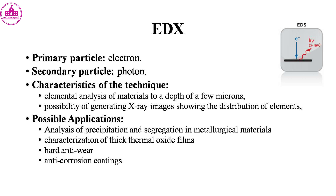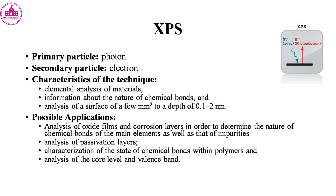XPS uses an X-ray primary particle and detects electron secondary particles. It provides elemental analysis of materials and information about the nature of chemical bonds, analyzing a surface area of a few millimeters to a depth of 0.1–2 nm. Applications include analysis of oxide films and corrosion layers, analysis of passivation layers, and characterization of the state of chemical bonds within polymers.